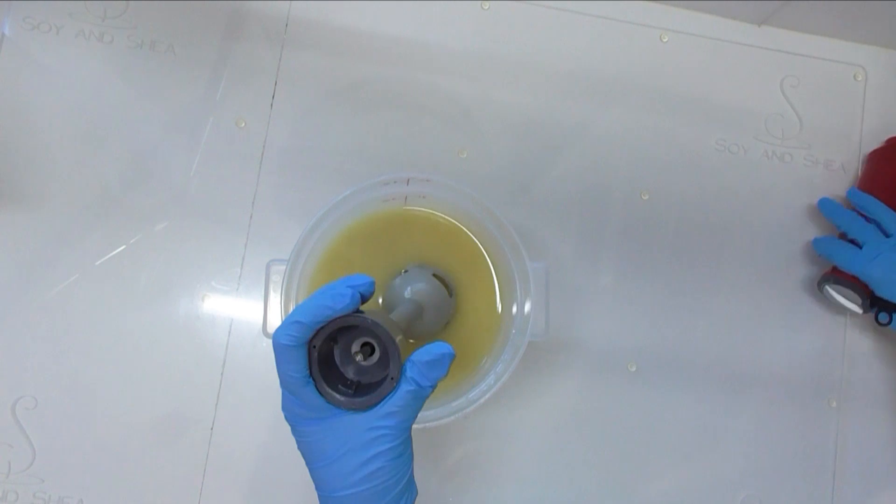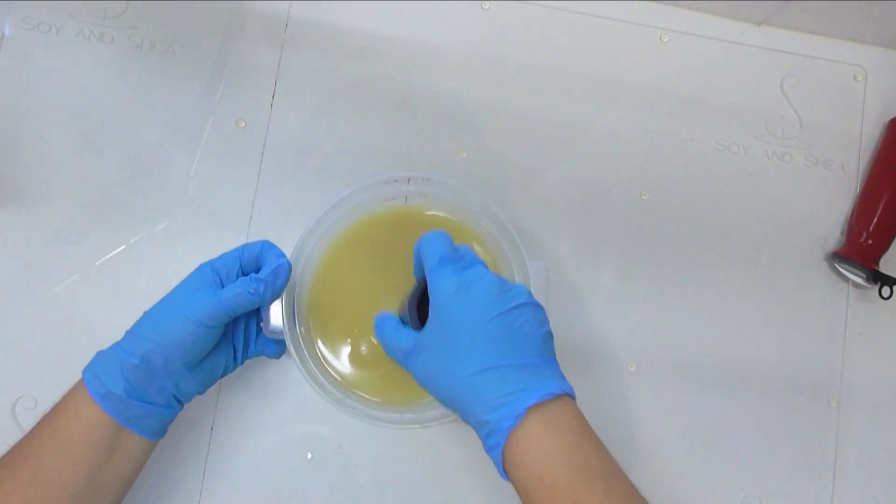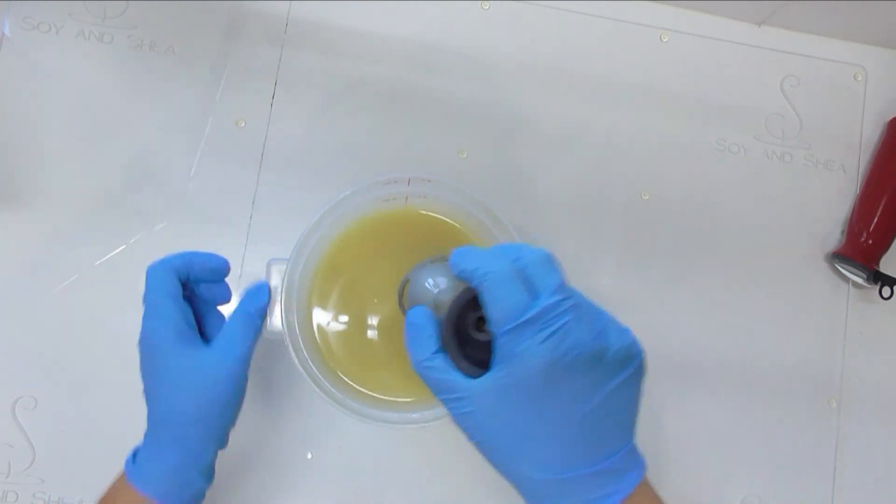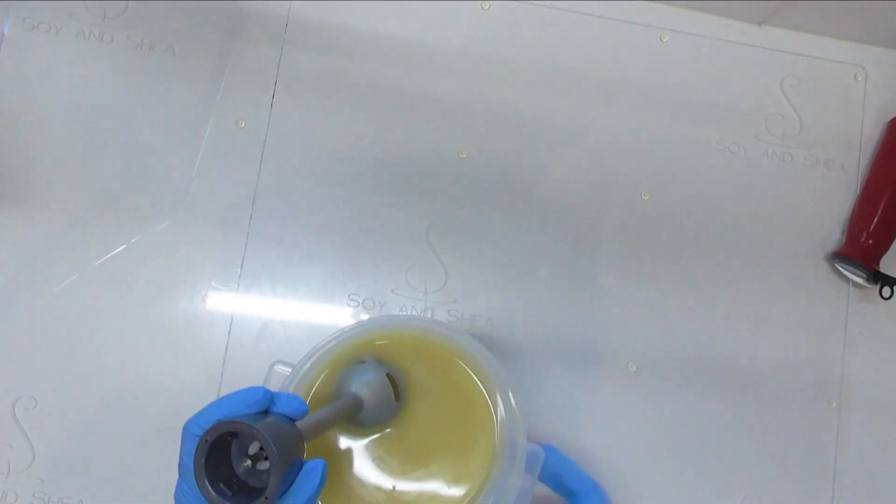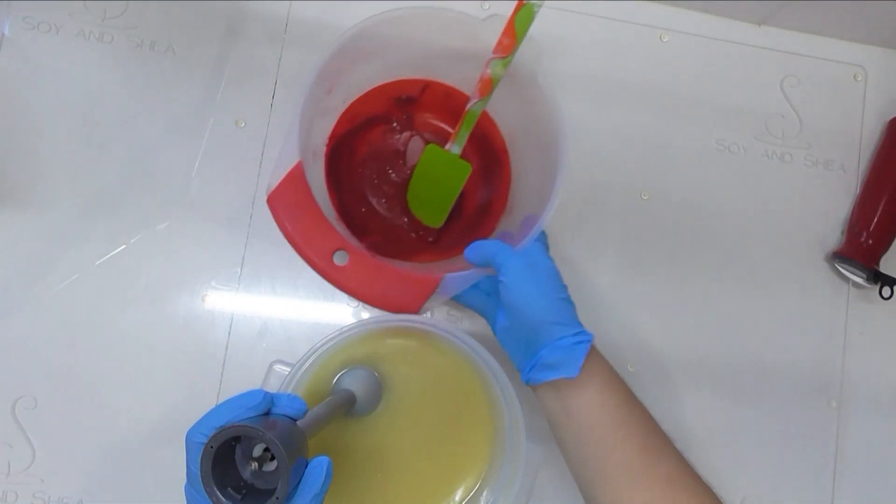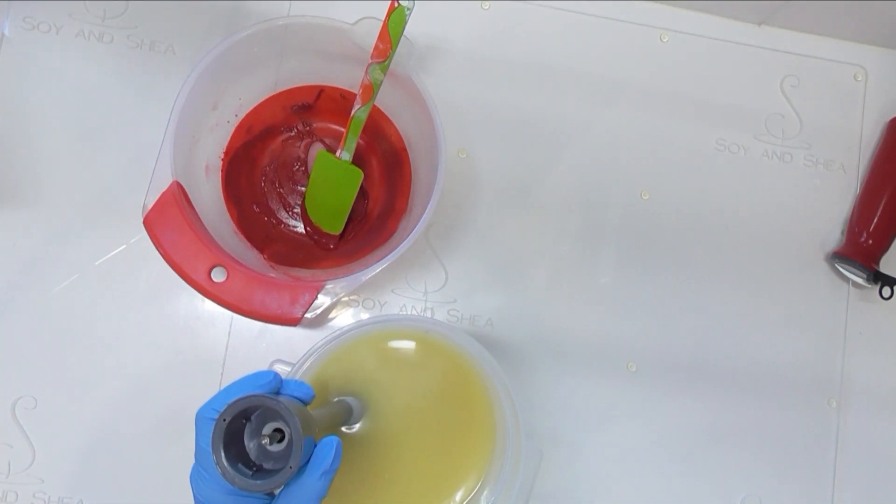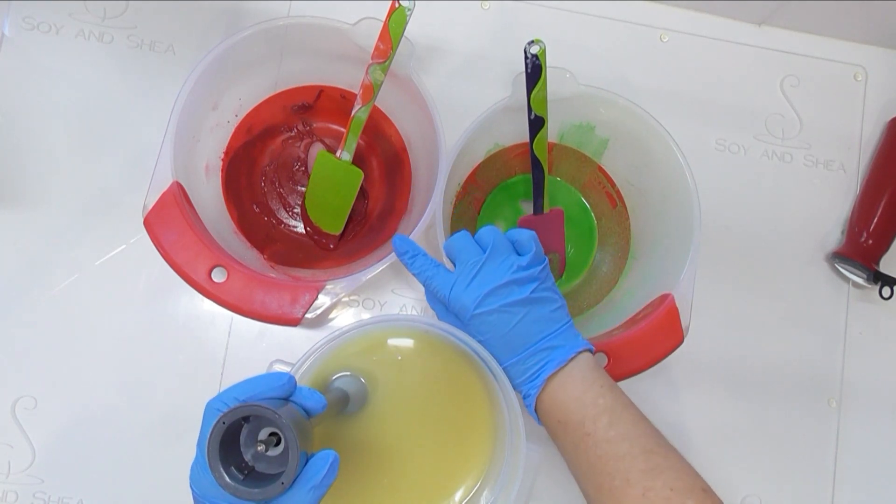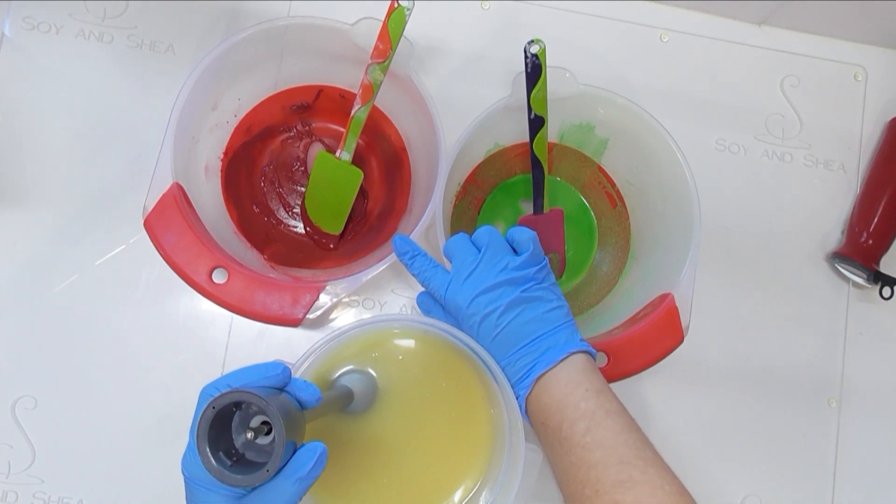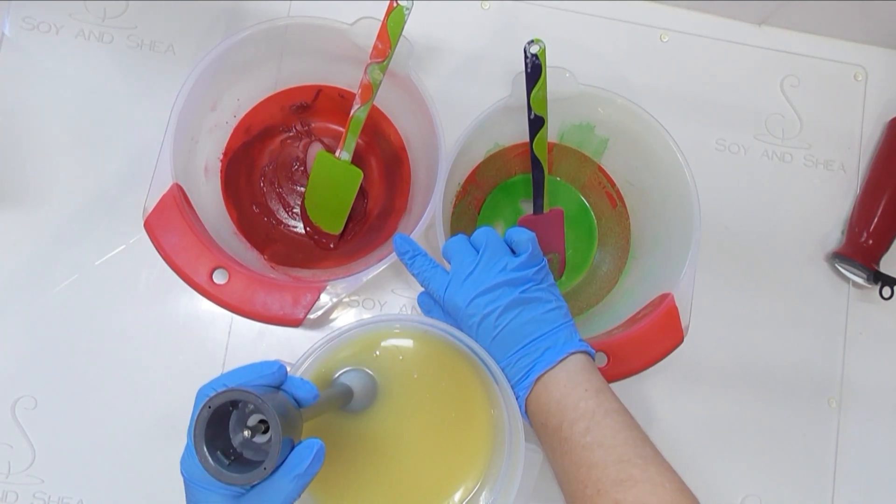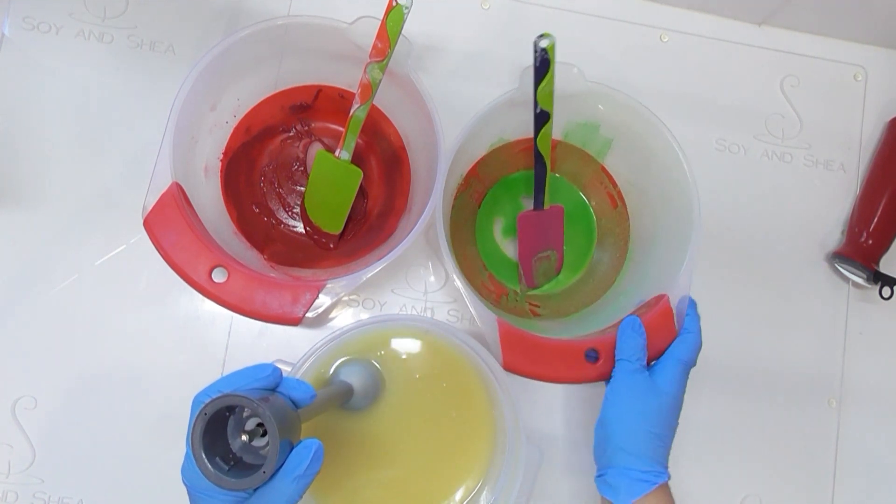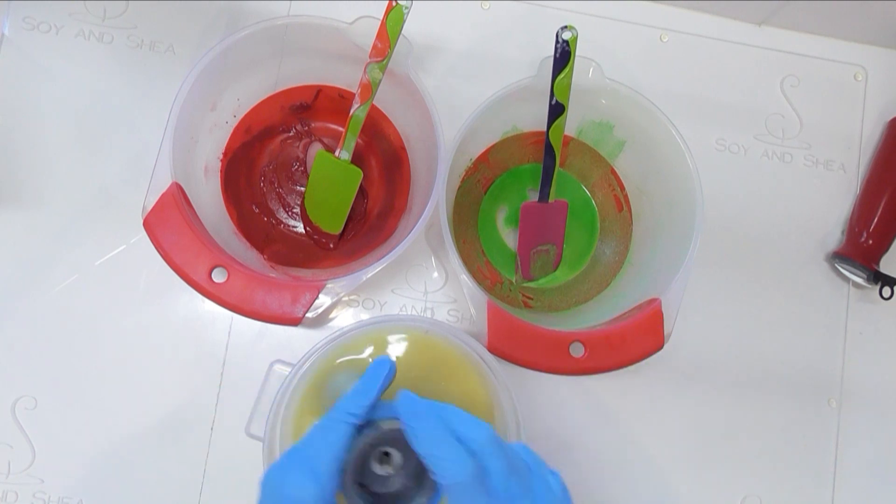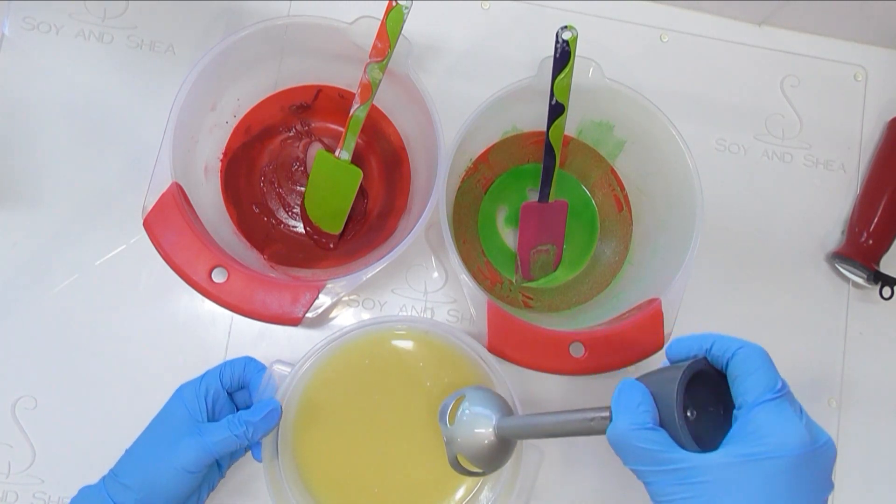Alright, I gave that a couple of pulses with the stick blender and then I have just stirred that in to make sure that we stay at emulsion and don't start creating a trace. What I'm going to do is split this off into two colors to start with. In this jug I have some Really Red mica from Nurture Soap which I've mixed with a little bit of Desire mica from Mica Obsession, and in this one I have a combination of Jade and Lime Spider to get a really nice bright green.